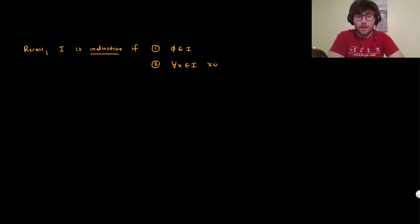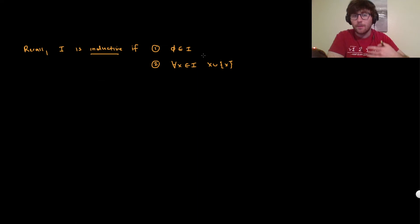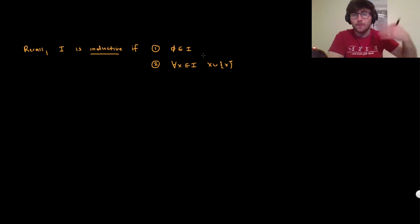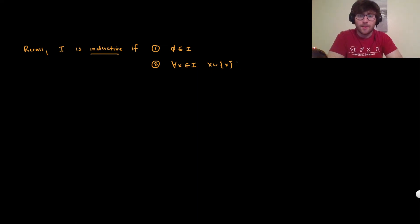What does it mean to add one? It means that if we take our set x and union it with the set containing itself — so we take whatever x is and include that set — this successor is also going to be in I.